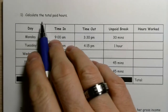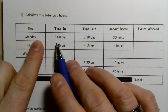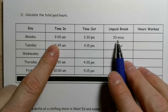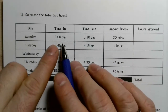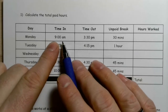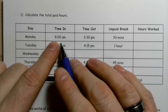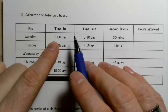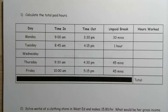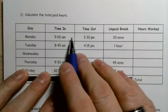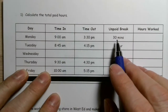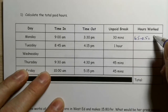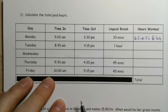Calculate the total paid hours. On Monday we timed in at 9 a.m. and timed out at 3:30, but we had a 30-minute unpaid break. From nine to 12 is three hours, and 12 to 3:30 is three and a half hours, so that's six and a half hours. Then 6.5 hours minus 0.5 hours for that break gives us six hours that we would get paid for.